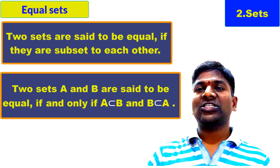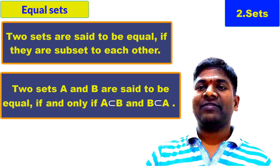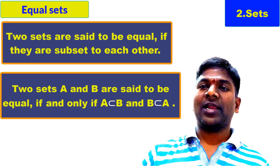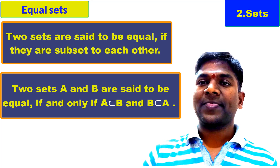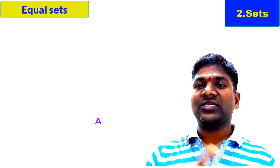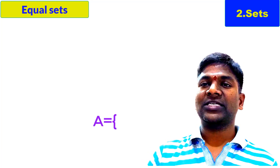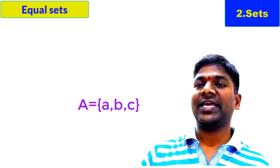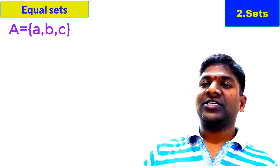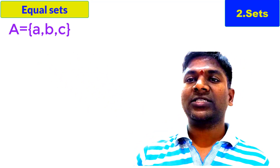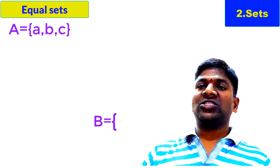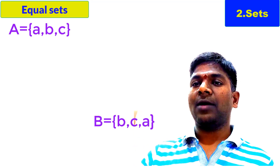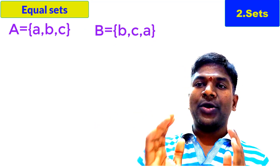Let us understand with an example. Let us take set A, which consists of the elements A, B, and C. These are the three elements in set A. Let us take another set B, which consists of the elements B, C, A.